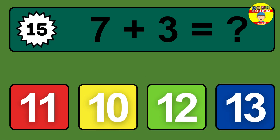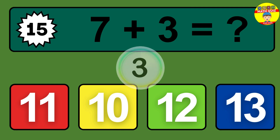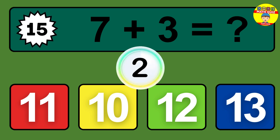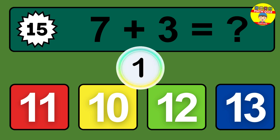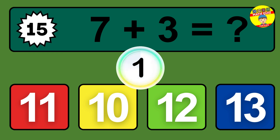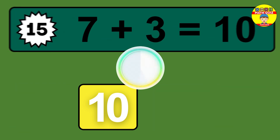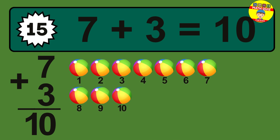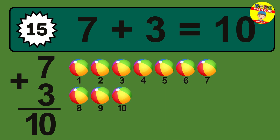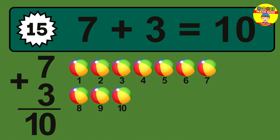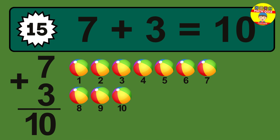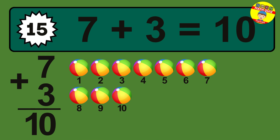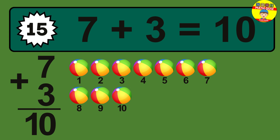Question 15. 7 plus 3 equals what? The answer is 7 plus 3 is 10. Let's count it: 1, 2, 3, 4, 5, 6, 7, 8, 9, 10.